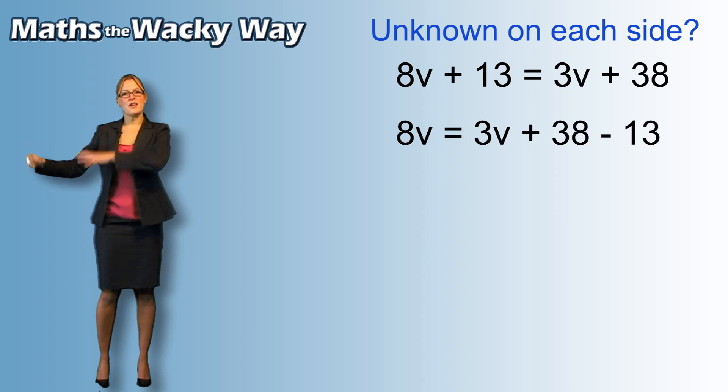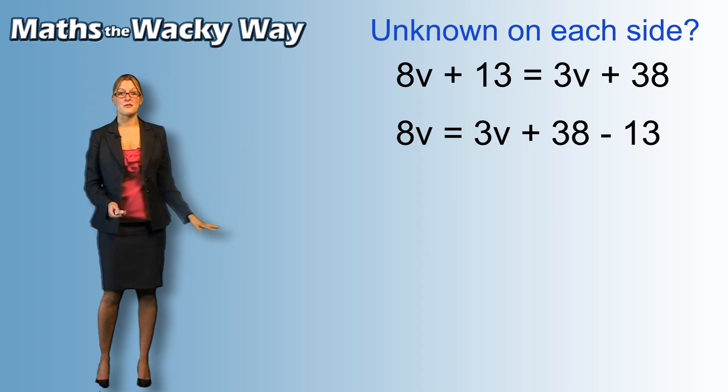Now, the side with the 8v is the side that we're going to gather those terms on for v. So, what we need to do is gather all the v's on that side and then all the non-v's will gather on the other side.